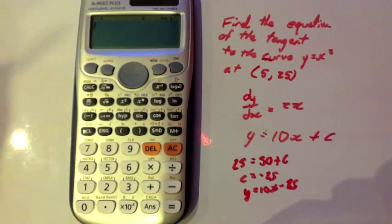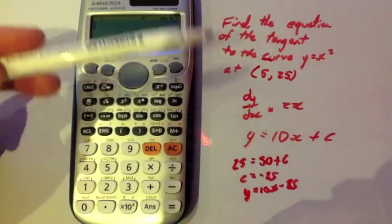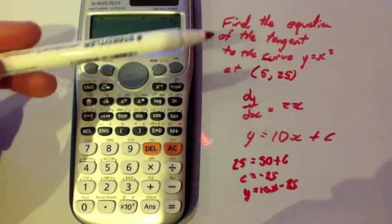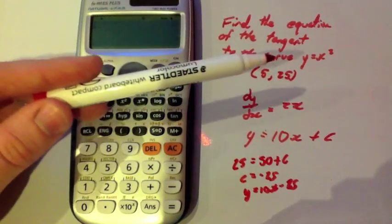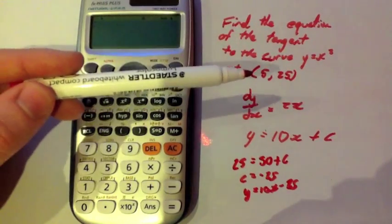Obviously, you need to know how to do this yourself, and here I've quickly done a typical question where it says, find the equation of the tangent to the curve y equals x squared at the point (5, 25).